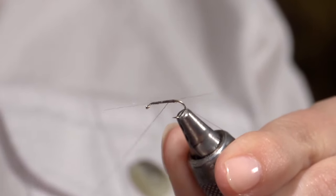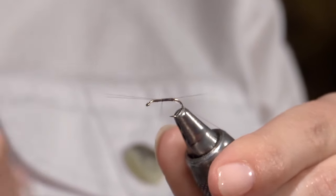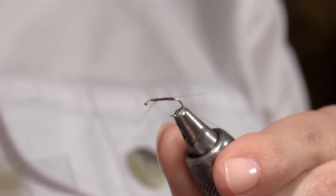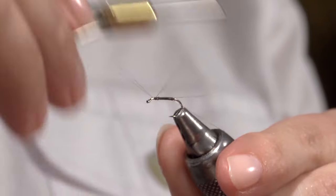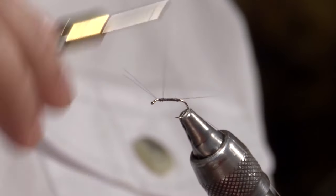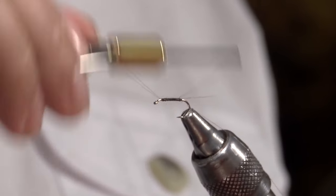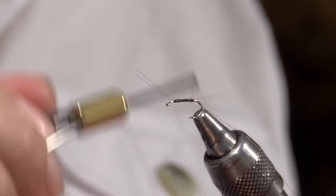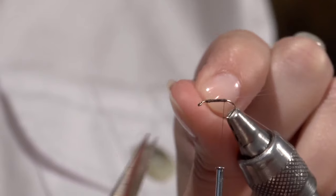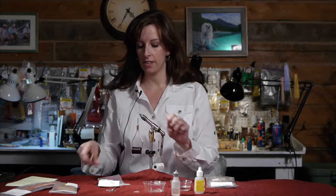And then I run my thread back down to right before the eye. I'll run my thread back down to hook point. Trim off my little excess there.